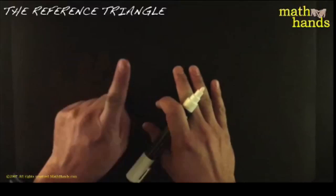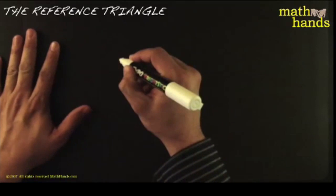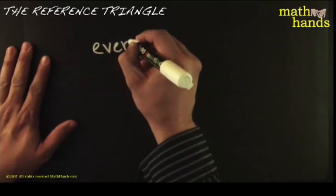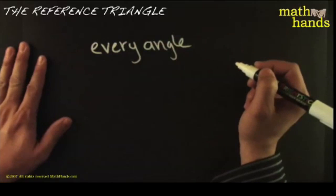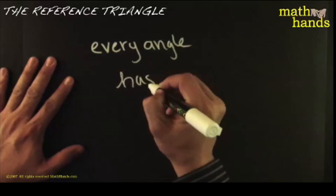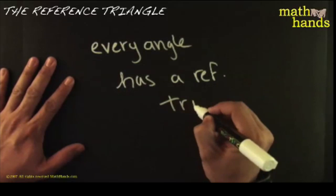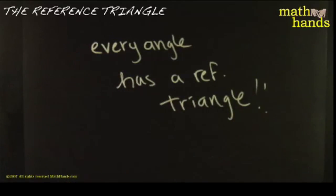In a couple steps, first part of the idea is this: every single angle — I don't mean some angles, I mean every single angle — has what we call a reference triangle. That's the lesson for today: every single angle has what we call a reference triangle.